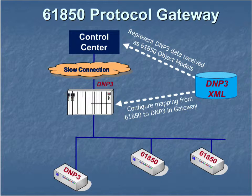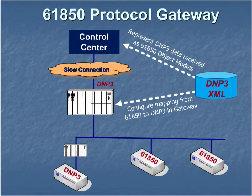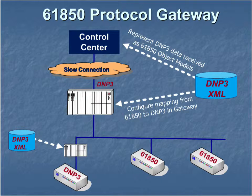The substation RTU can usually read DNP3, IEC 61850, and a range of other protocols. But if other devices in the substation need data from the DNP3 device, a protocol converter can be configured by DNP3 XML to translate from DNP3 to IEC 61850, instead of IEC 61850 to DNP3 as just described.